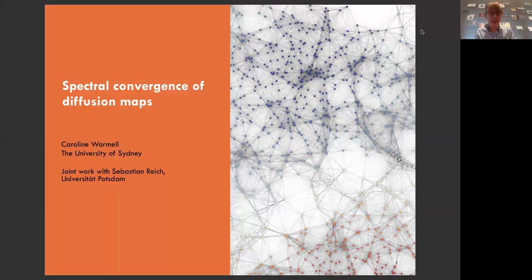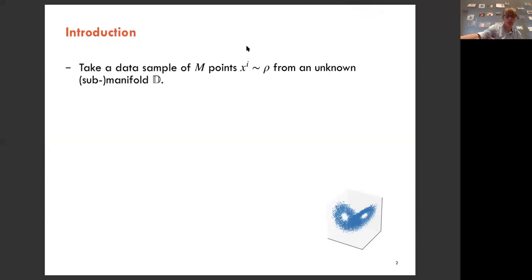This is work that came out of a visit with Sebastian Reich at the University of Potsdam earlier this year, directly before coronavirus hit Europe. The idea is: let's imagine that we've got some low-dimensional manifold, which we'll call d, that we would like to do some sort of numerics on — perhaps explore it, visualize it, do some kind of reductions, or even solve PDEs.